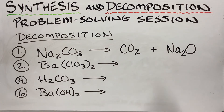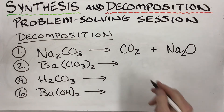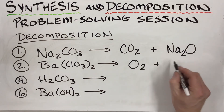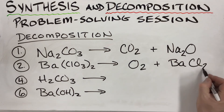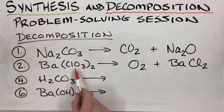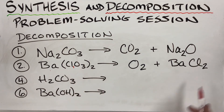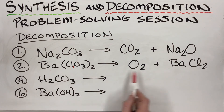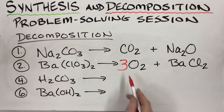Barium chlorate: chlorates kick out oxygen. Remove the O₂ and what's left is barium and chlorine. Crisscross to get barium chloride, BaCl₂. Now balance: barium is fine; the bracket gives two chlorines; chlorate has three oxygens, so two chlorate units give six oxygens — put a 3 in front of O₂ to make six on the right. Balanced.